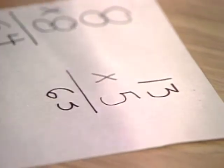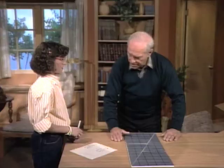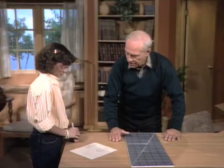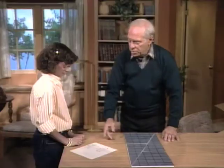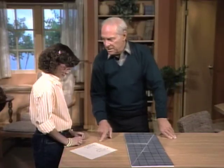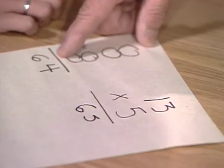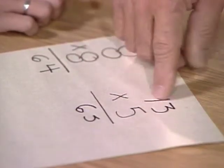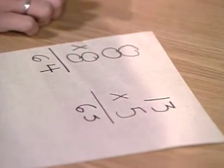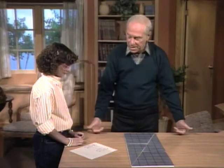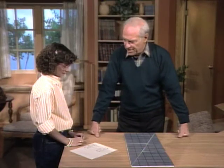That equals 65, but there's something wrong. Why? Because there's one extra square. So are you sure of your mathematics? Yes. Eight times eight is definitely 64. Right. Thirteen times five is definitely 65. Right. So where did the extra square come from?